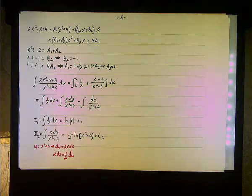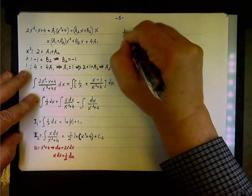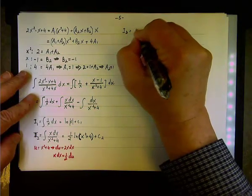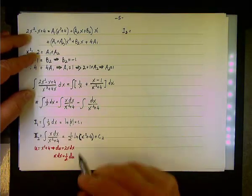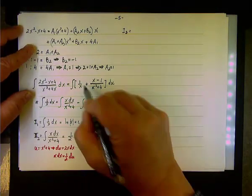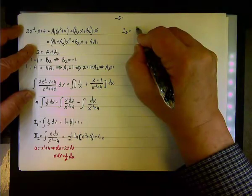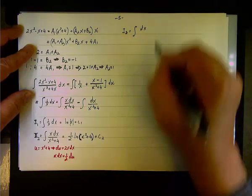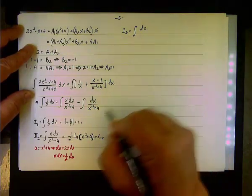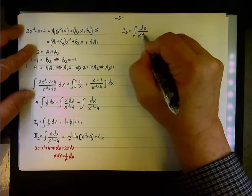The third integral I3 = ∫ dx / (x² + 4), which we will subtract. Let me apply a couple of tricks here.